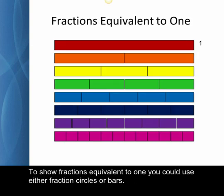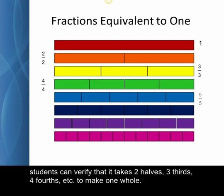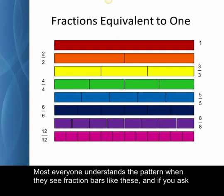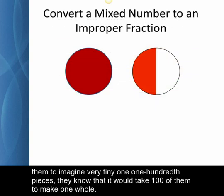To show fractions equivalent to one, you could use either fraction circles or bars. We have fraction bars here. By lining up all the like pieces together under the red unit bar, students can verify that it takes two-halves, three-thirds, four-fourths, etc. to make one whole. Most everyone understands the pattern when they see fraction bars like these, and if you ask them to imagine very tiny one-one-hundredth pieces, they know that it would take a hundred of them to make a whole.